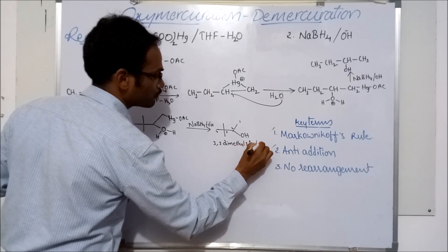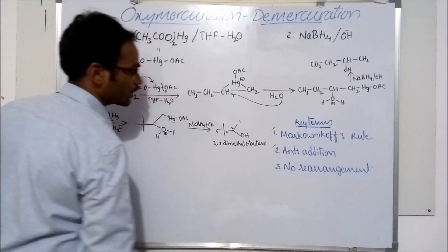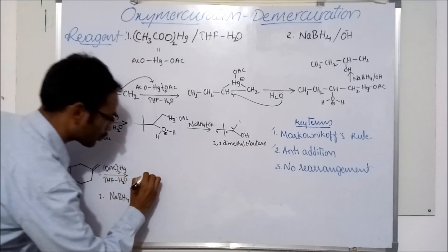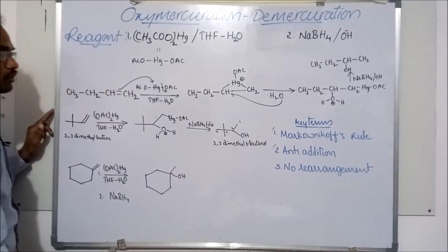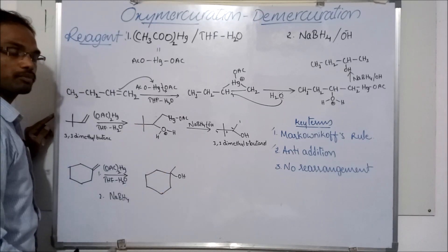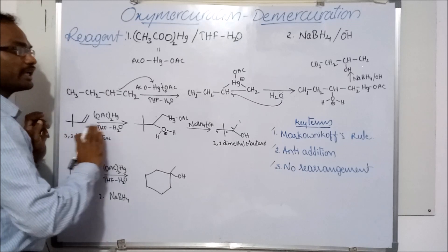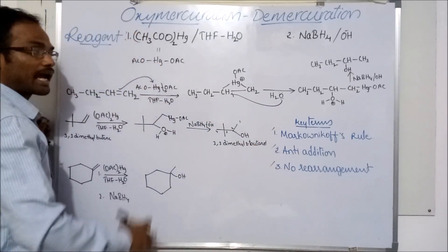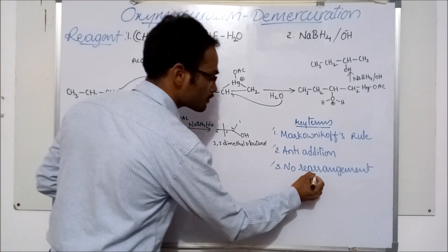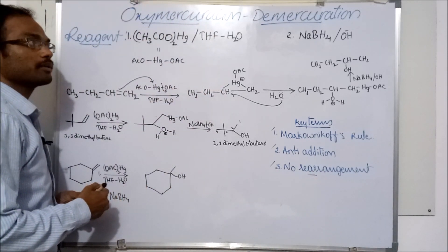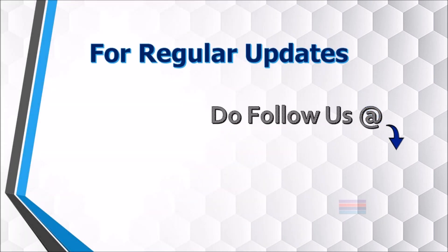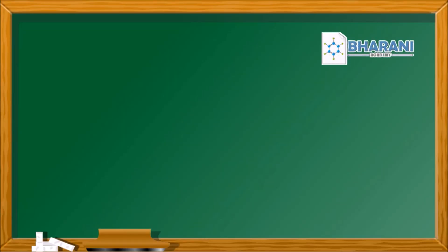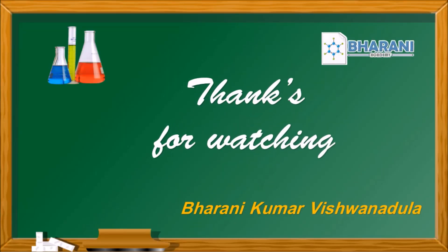For the third example, I am directly writing the product — the alcohol (–OH). Hope you can easily write the products now. Note that there is no carbocation intermediate in this reaction, so there is no rearrangement. Thank you.